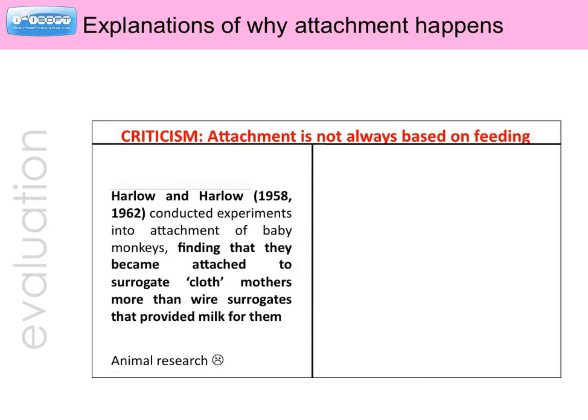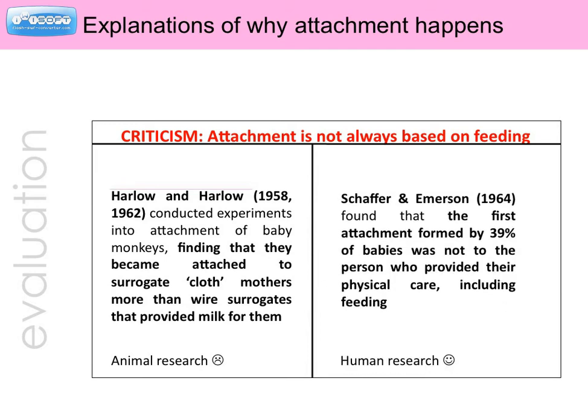The first piece of research was conducted by Harlow and Harlow, who conducted experiments into the attachment of baby monkeys. Their findings suggest that the monkeys became attached to surrogate mothers made of cloth more than surrogate mothers made of wire that actually provided milk for them. The second study was conducted by Schaffer and Emerson, who found that the first attachment formed by 39% of human babies was not to the person who provided their physical care, including feeding.